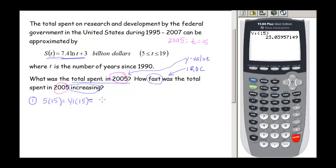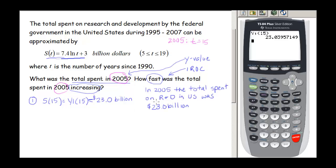Rounding to the nearest tenth, S of 15 is approximately 23.0 billion dollars. Usually they want us to answer in a sentence, so: in 2005 the total spent on research and development by the federal government in the U.S. was approximately $23.0 billion.